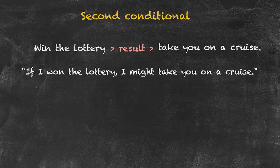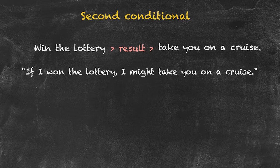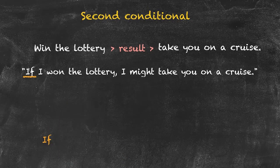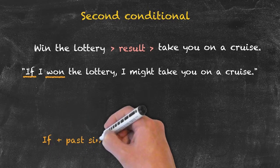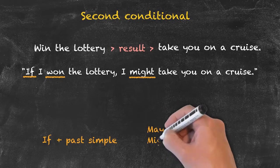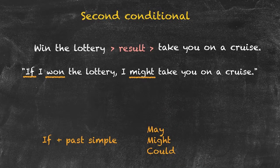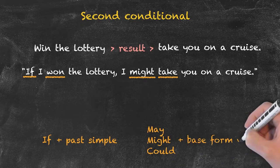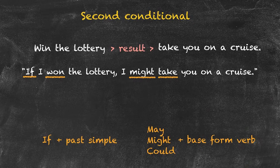Let's have a look at the structure of the second conditional. We have 'if' in the first clause, plus the past simple, then a modal — 'might,' which we could substitute with other modals — and the base form of the verb. This is similar to the first conditional.